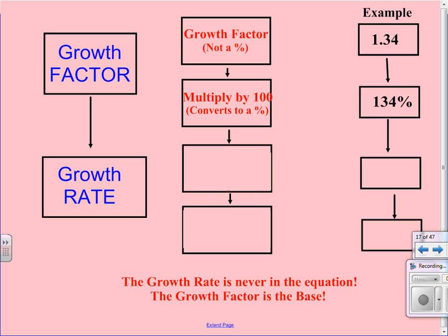The next step that we do is we subtract that 100%, subtract the whole to determine the percent that it actually increases. When I subtract 100% from 134%, I get 34%. And what's left is the growth rate written as a percent.